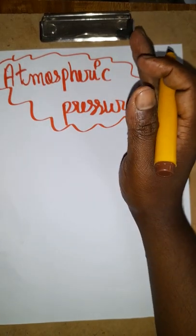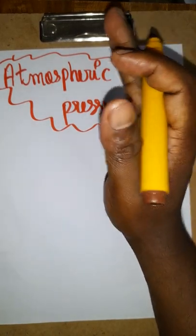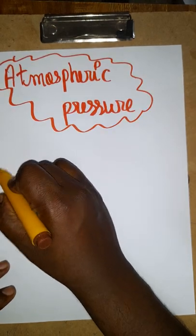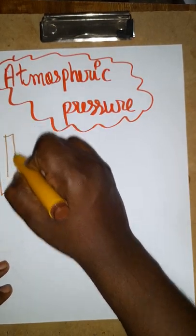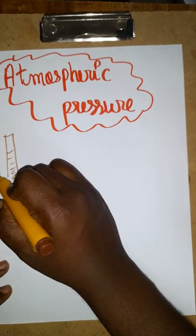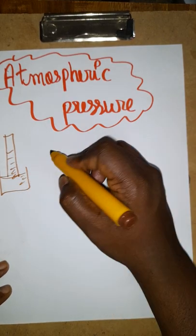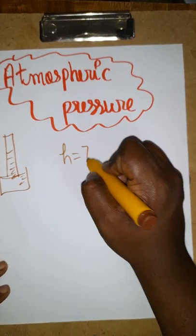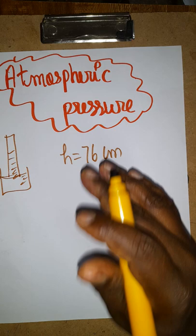Hello students, today we are going to see what is atmospheric pressure. If we use the barometer, a simple barometer, the mercury is going to stand at 76 centimeters. That's going to be due to the atmospheric pressure. The height is going to be called 76 centimeters.